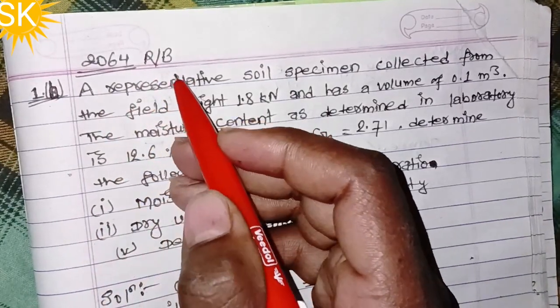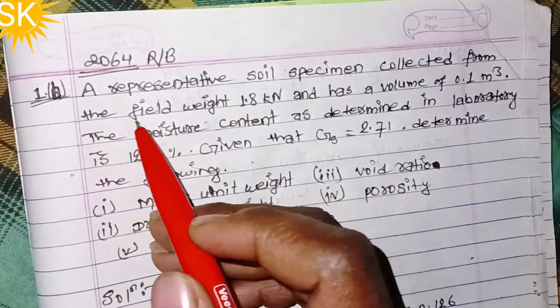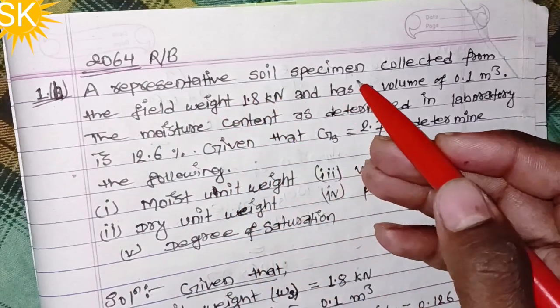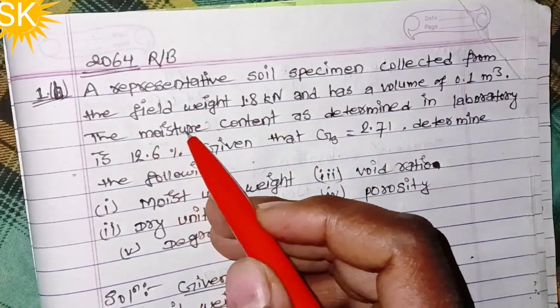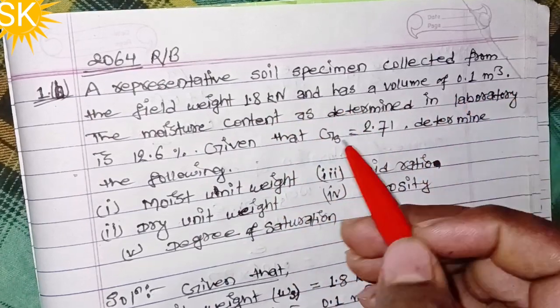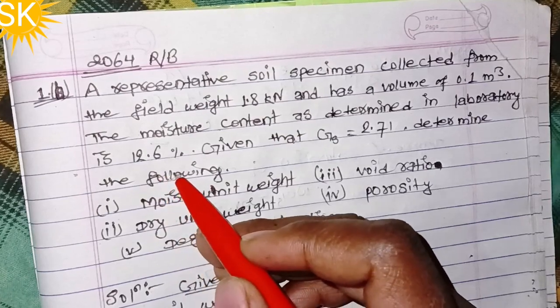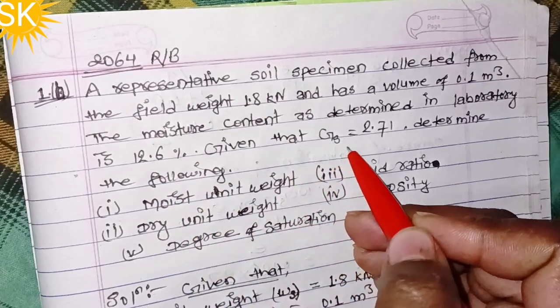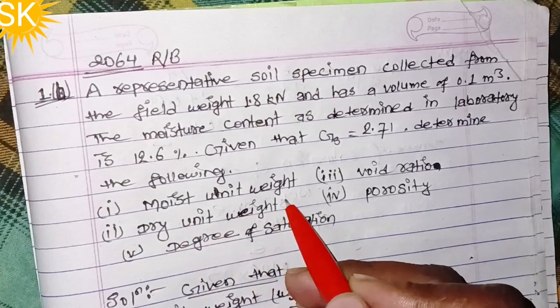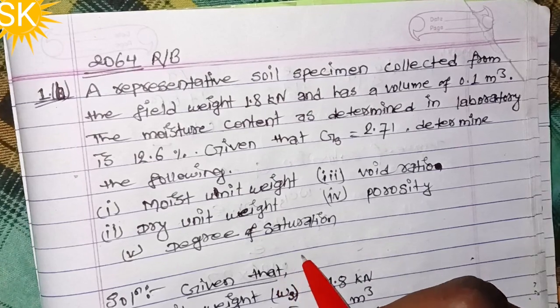Problem 2064 from the regular bag. A representative soil specimen collected from the field weighs 1.8 kilonewton and has a volume of 0.1 meter cube. The moisture content as determined in laboratory is 12.6 percent. Given that